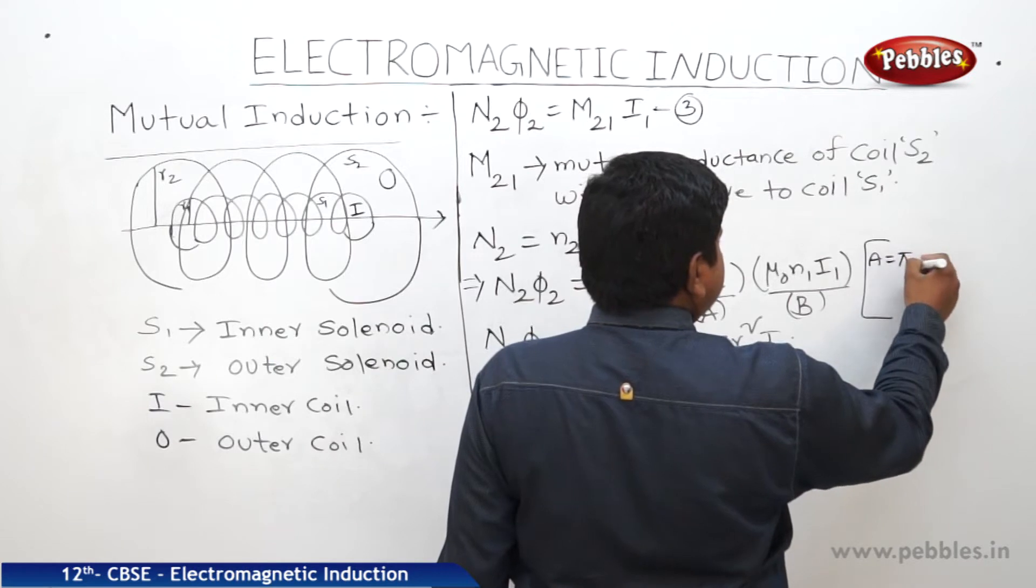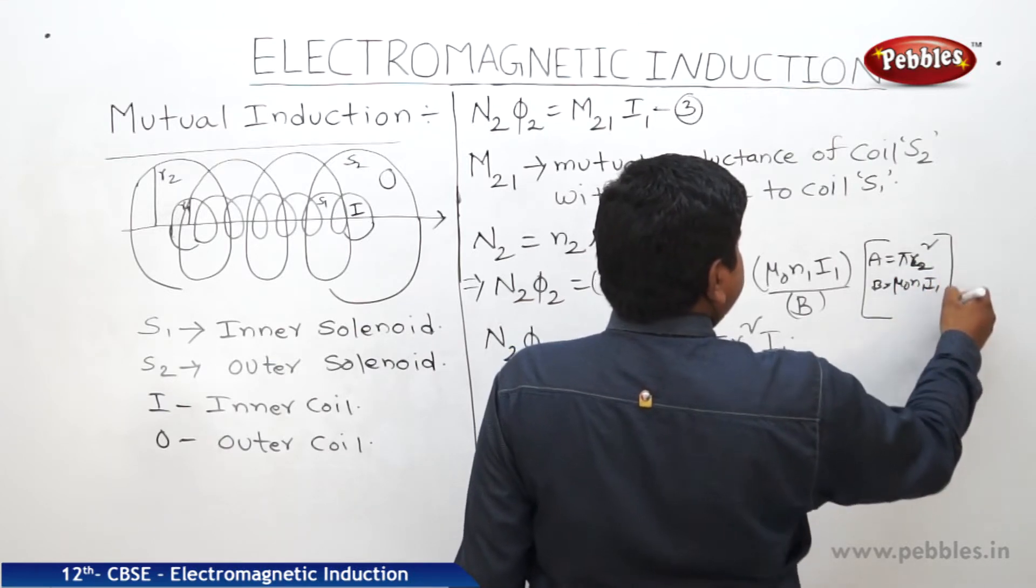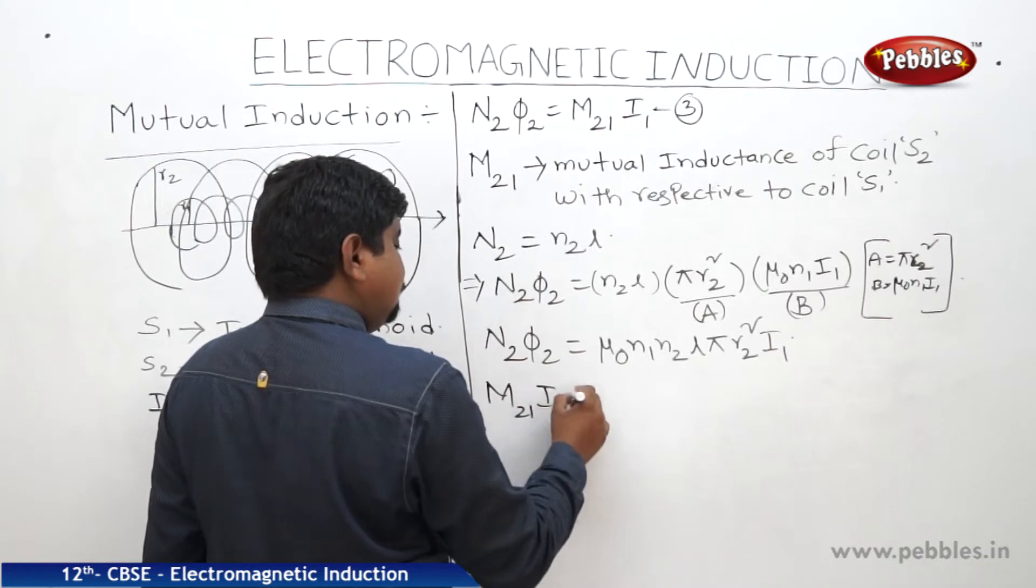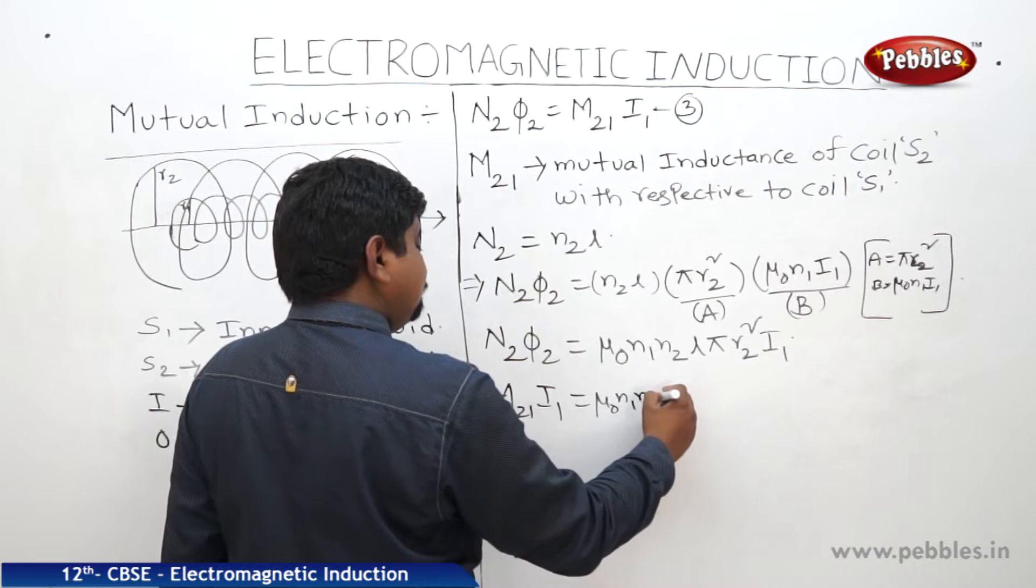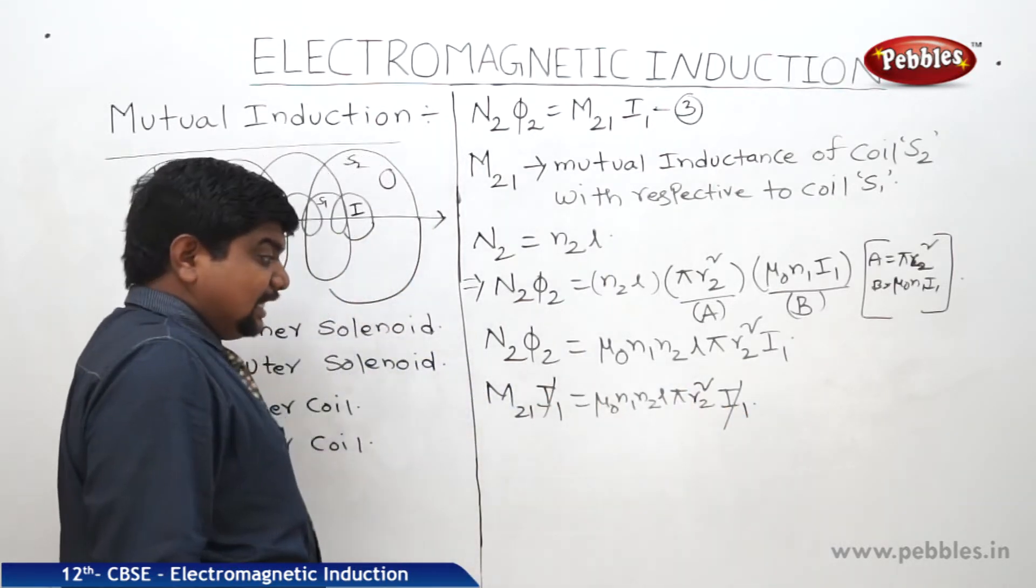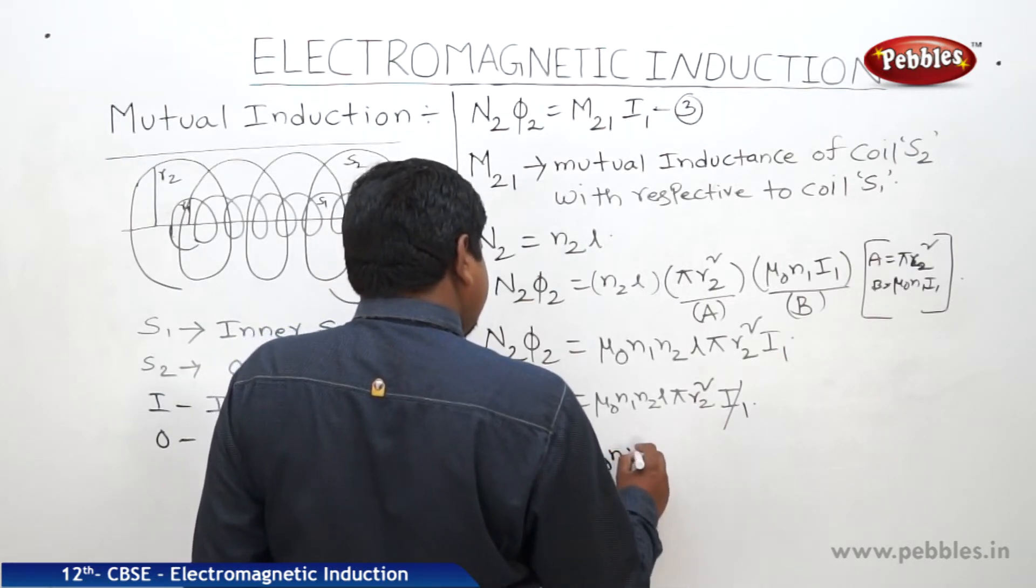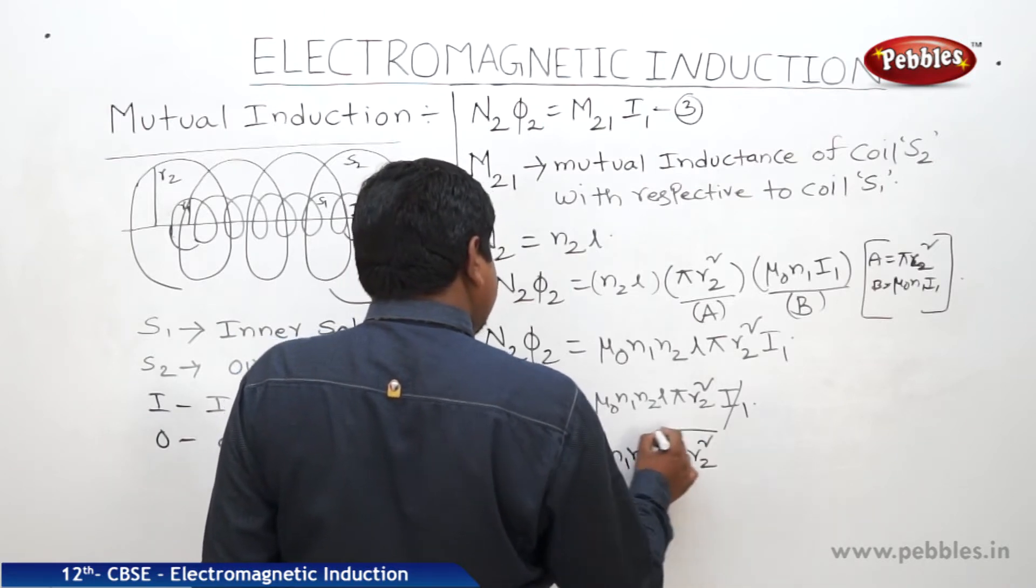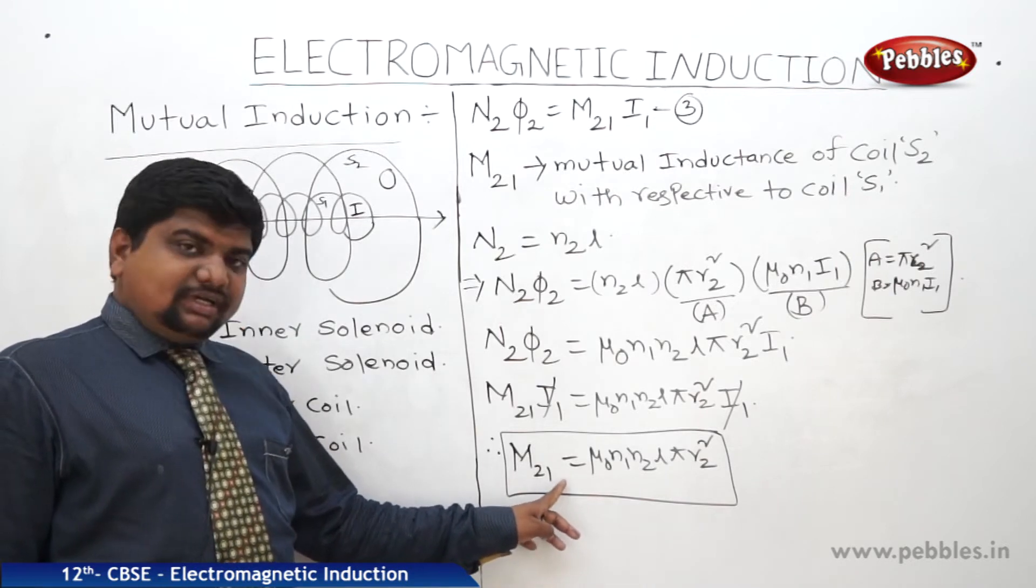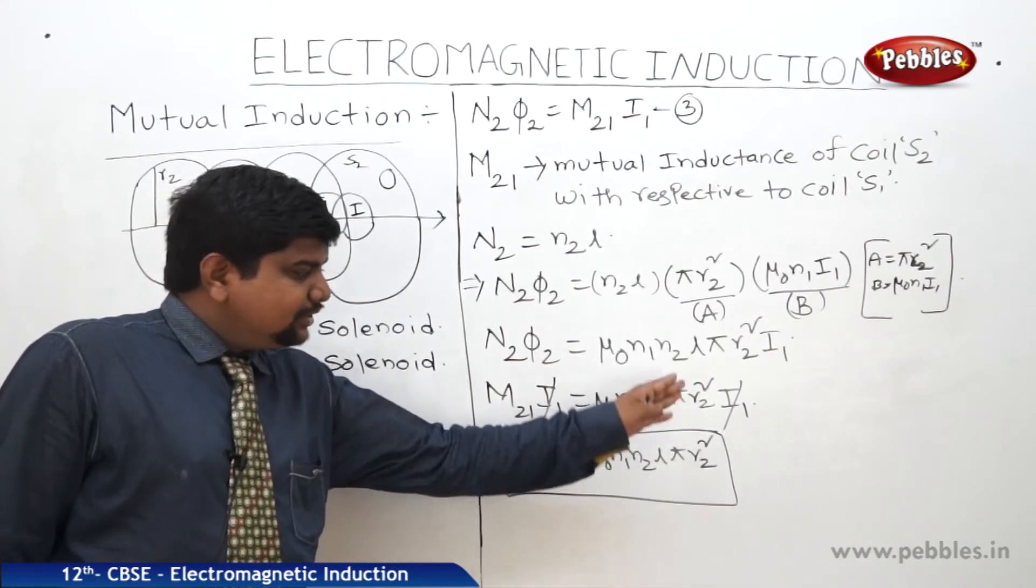We can write A is equal to pi R2 square and B is equal to mu 0 N1 I1. So now N2 phi 2 is equal to M21 I1. Therefore M21 I1 is equal to mu 0 N1 N2 L pi R2 square I1. If you see the equations of the previous one and this one, these two equations are having same value but what is the physical significance of these values? We are going to see now.